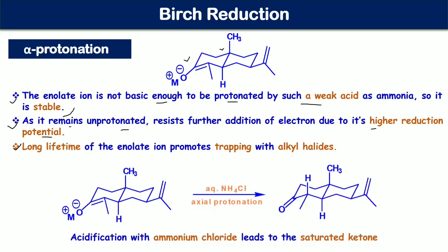In the last step, the enolate ion undergoes axial protonation in the presence of aqueous ammonium chloride, which is slightly acidic, leading to formation of the saturated ketone product. The key point is that protonation takes place axially because of better overlap of the p orbital with the hydrogen atom. Additionally, the methyl group in the product occupies the equatorial position, which is sterically preferable.